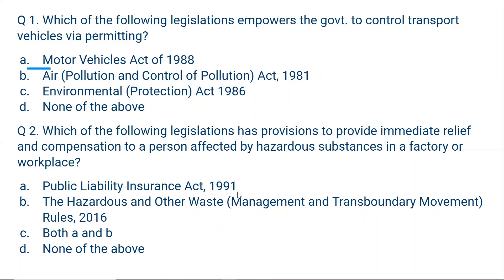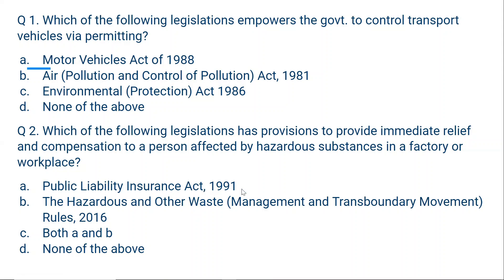The Public Liability Insurance Act 1991 or the Hazardous and Other Waste Management and Transboundary Movement Rules 2016? The simple answer is A: Public Liability Insurance Act. The name itself indicates what this act does, and it was enacted in the year 1991 after the Bhopal gas tragedy, because when the Bhopal gas tragedy occurred, there was no such law, and hence people could not be compensated properly.